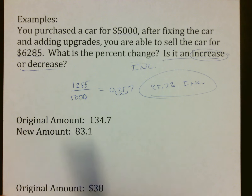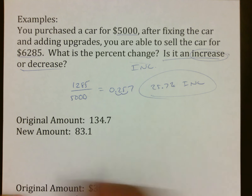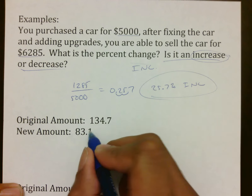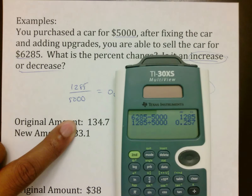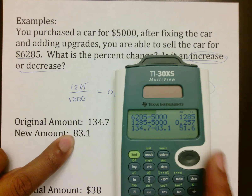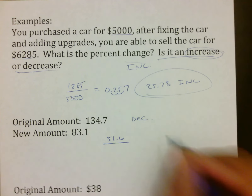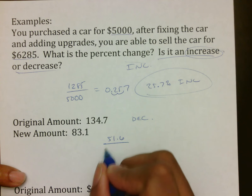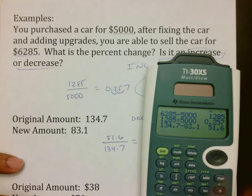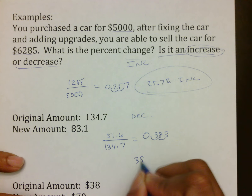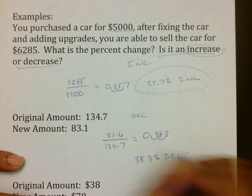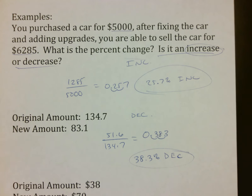Example two: original amount 134.7, new amount 83.1. Since I started at 134.7 and am now at 83.1, this is a decrease. We do 134.7 minus 83.1 which equals 51.6, then divide by the original amount: 51.6 divided by 134.7 gives 0.383, which converts to a 38.3% decrease.